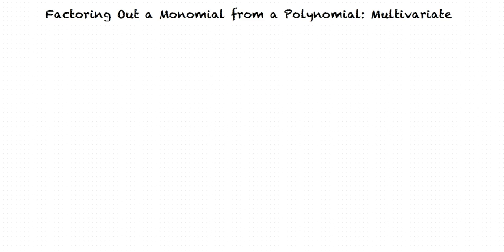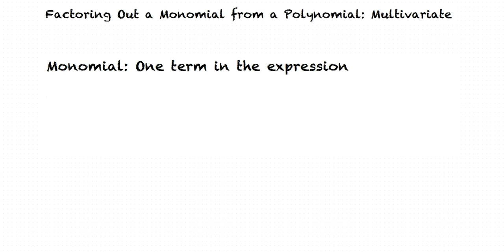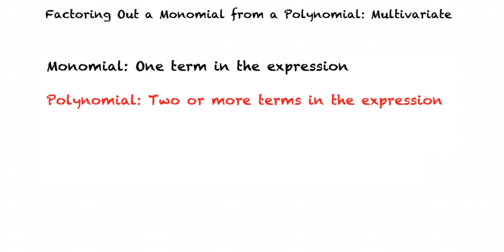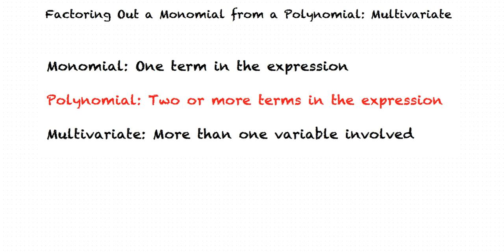This video will cover the topic of factoring out a monomial from a polynomial multivariate. The term monomial means that there is only one term in the expression. The term polynomial means that there are two or more terms in the expression. Finally, the term multivariate indicates that there are more than one variables involved.